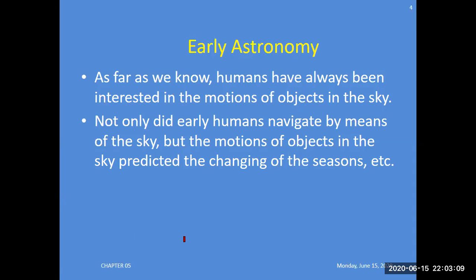Not only did early humans navigate by means of the sky, but also the motions of objects in the sky predicted the changing of seasons. These are different types of theories that people used to study by looking at the sky to understand the changing of seasons, calculating time duration, and other seasonal patterns. They had sound knowledge at that time for their life.